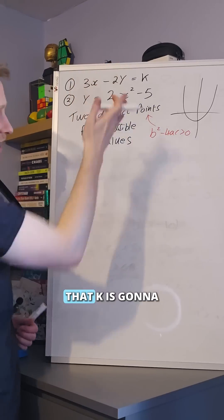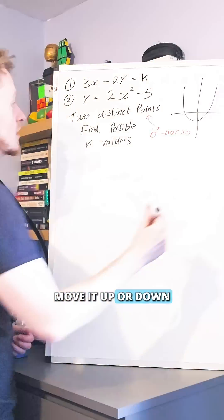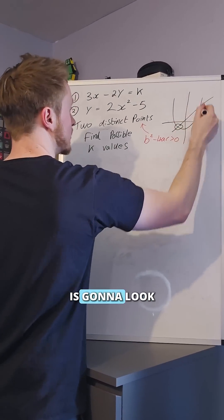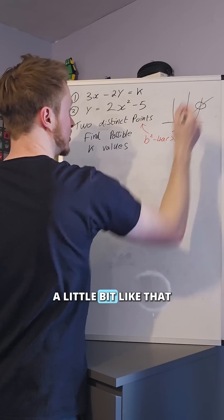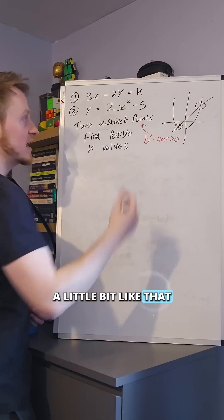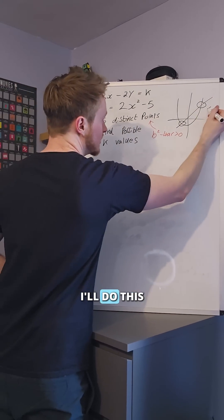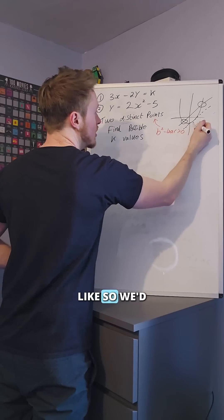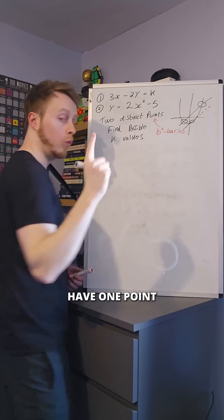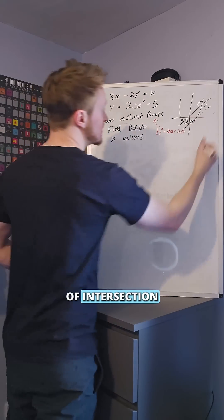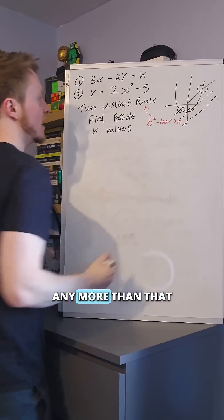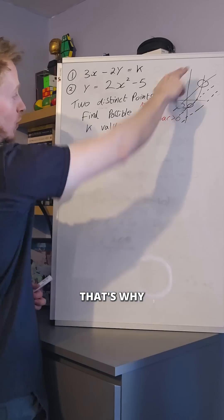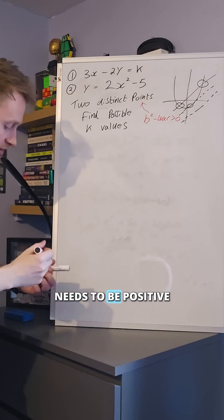Essentially, that k is going to move it up or down. Two points of intersection is going to look a little bit like that. If we were to move it down, I'll do this as a dotted line, like so — we'd have one point of intersection. And if you were to do it any more than that, you'd have zero. That's why it needs to be positive.